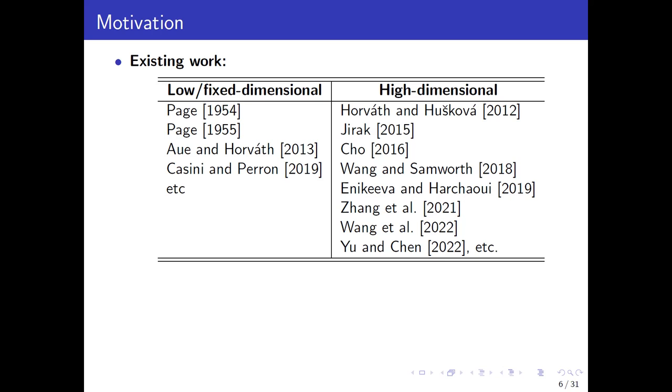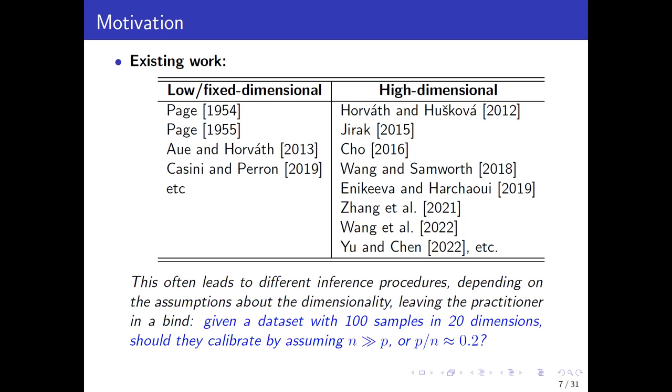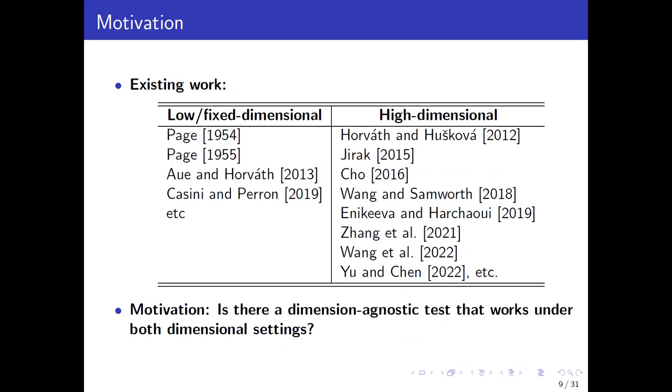In recent years, there is a surge of research in the change point testing problem targeting at high dimensional data. The common issue for high dimensional methods is that they usually require some artificial technical assumptions, sometimes on the growth rate of dimensionality, sometimes on the ratio between sample size and dimensionality. These assumptions cannot be easily satisfied by low dimensional data, so it's not surprising that this kind of method may not work well for low dimensional data.